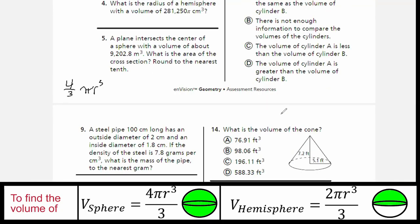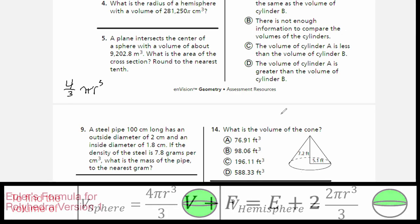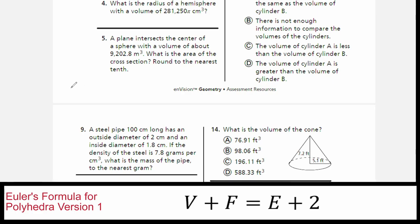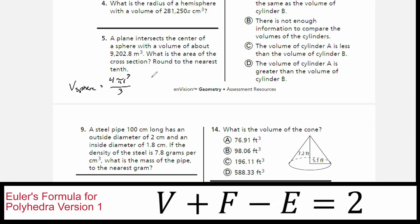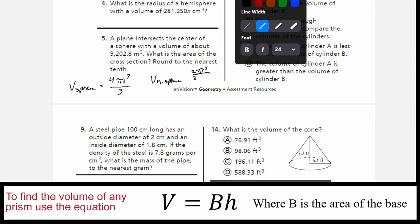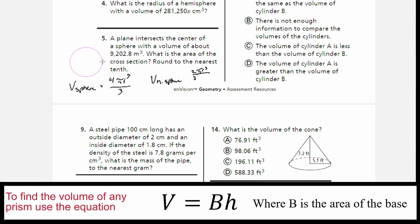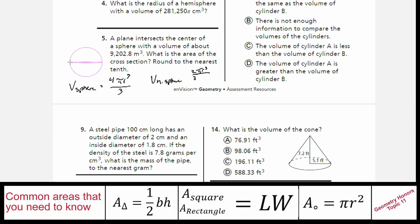Now we're looking for the volume of a hemisphere. The volume of a sphere is four pi r cubed divided by three, and the volume of a hemisphere is two-thirds pi r cubed. The way we get there: if a sphere has volume four-thirds pi r cubed, and I only need half of that, I divide by two. Four-thirds times one-half gives four-sixths, which simplifies to two-thirds.